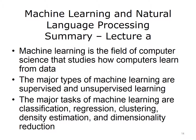This concludes Lecture A of Machine Learning and Natural Language Processing. In summarizing this lecture, we learned that machine learning is the field of computer science that studies how computers learn from data. The major types of machine learning are supervised and unsupervised learning. The major tasks of machine learning are classification, regression, clustering, density estimation, and dimensionality reduction.